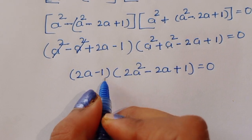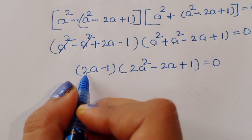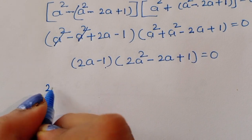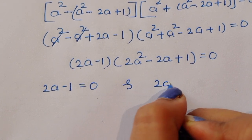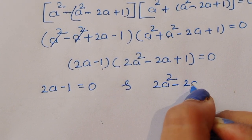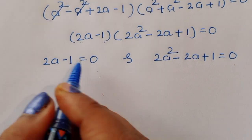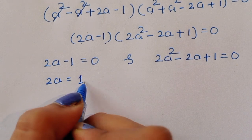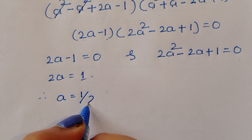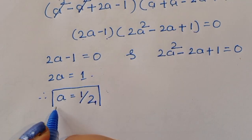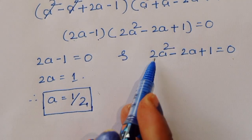So we get two factors: (2a minus 1) times (2a² minus 2a plus 1) equal to 0. From the first factor, 2a minus 1 equals 0, therefore 2a equals 1, therefore a equals 1/2. This is the value of a from the first equation.